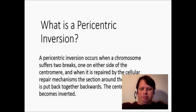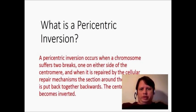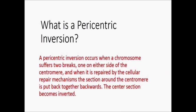The first question that you may think is: what is a paracentric inversion? Well, a paracentric inversion is what occurs when a chromosome suffers two breaks, one on either side of the centromere. When it's repaired by the cellular repair mechanisms, the section around the centromere is put back backwards so that the center section becomes inverted.